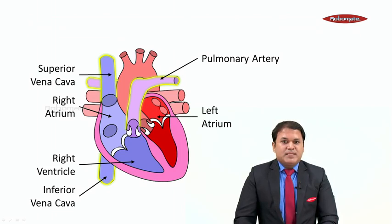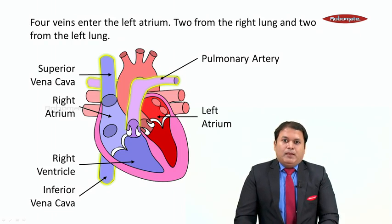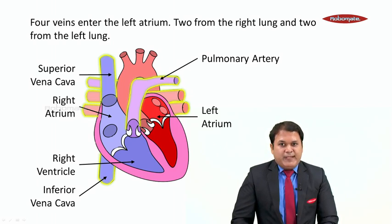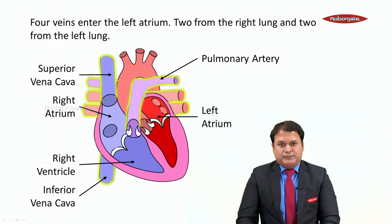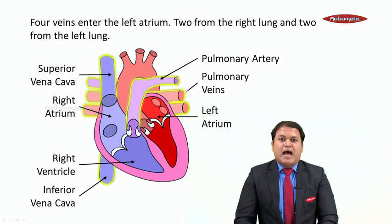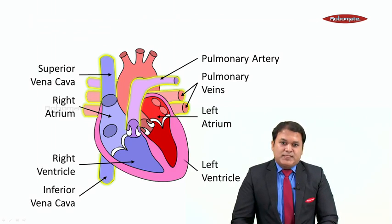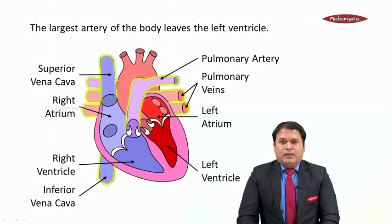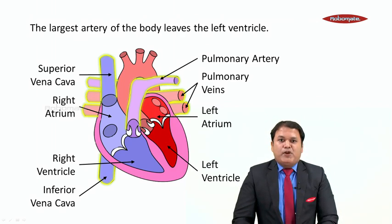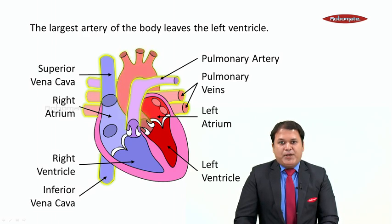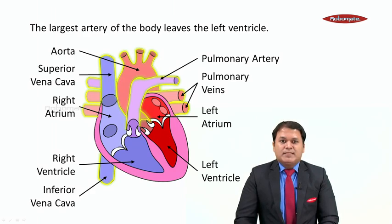Now moving on to the left side, this is the left atrium. Four veins enter the left atrium — as you can see, four veins entering the left atrium, two from the right lung and two from the left lung. Now these four veins are called as the pulmonary veins. And this is the left ventricle. The largest artery of the body leaves from the left ventricle. You can see this large artery coming out from the left ventricle, and this artery is called as the aorta.